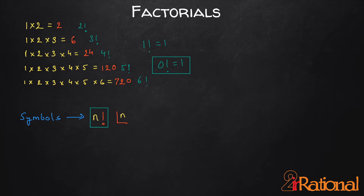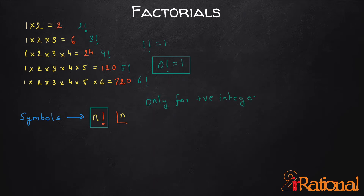N here is the number to which we are multiplying starting from 1. This is a good way to represent large multiplications with small symbols. Factorials have a limitation: they can only be calculated for positive integers. We cannot calculate them for negative values or non-integer values.